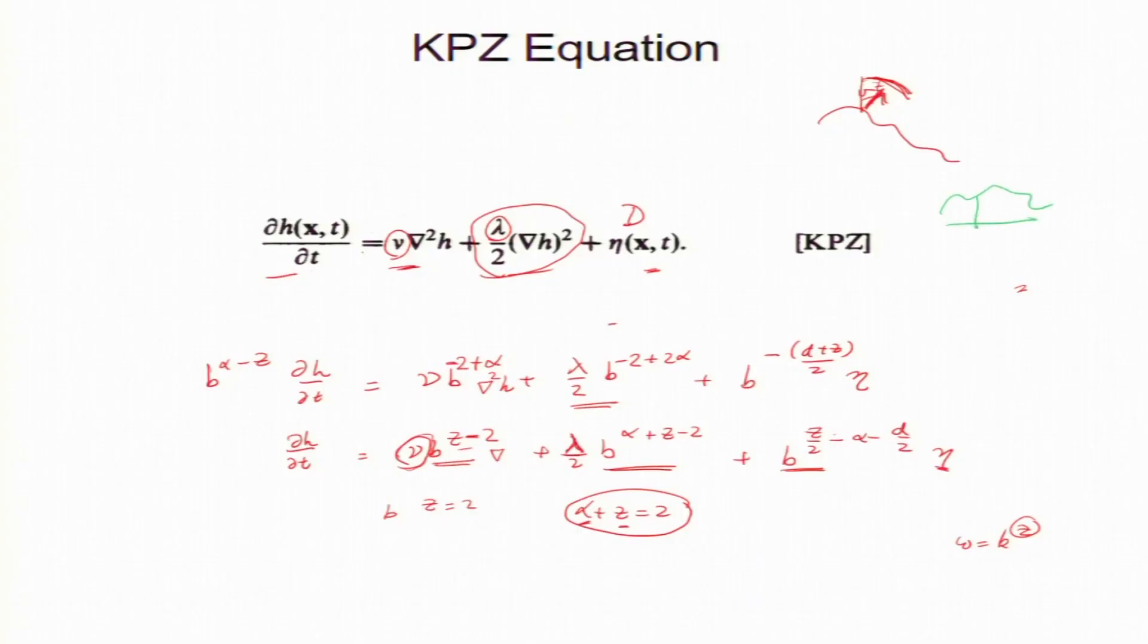So, surface is growing and so surface has a height, this surface has a height. So, the height of the surface is h, you drop particles and surface is growing and this height is given by this equation.